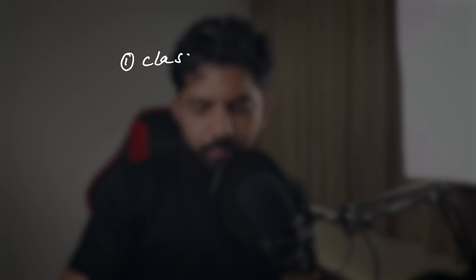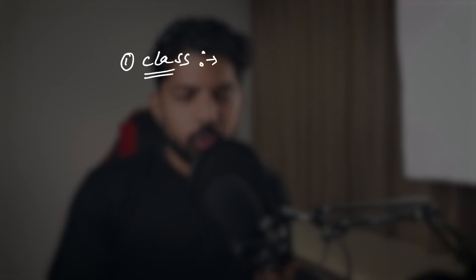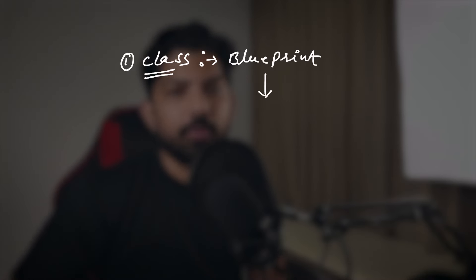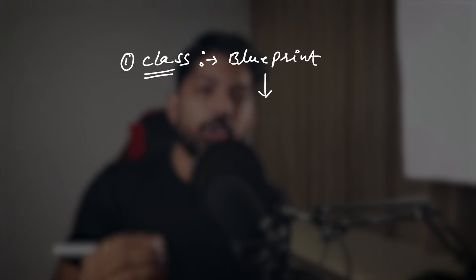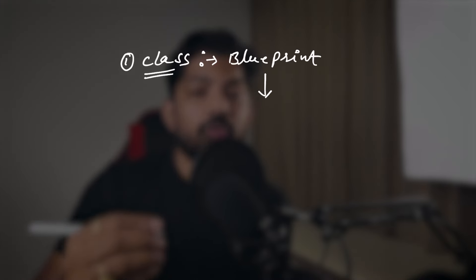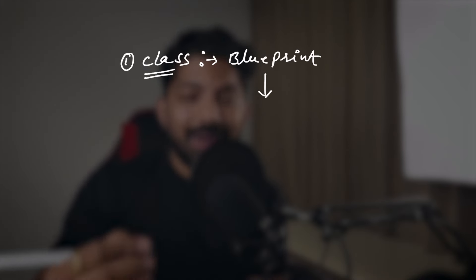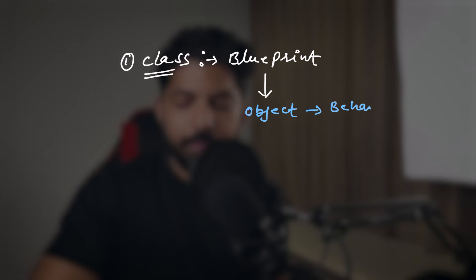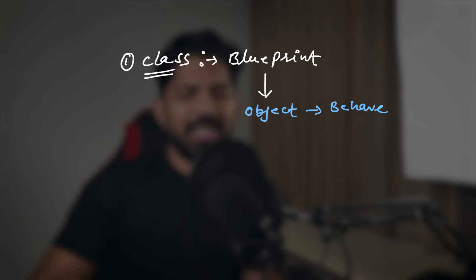Let's take the first concept: class. In simple words, a class is a blueprint which tells us how objects will behave. Don't worry, we will understand objects shortly. For now, just focus on class. The class is a blueprint that tells us how the objects will behave.